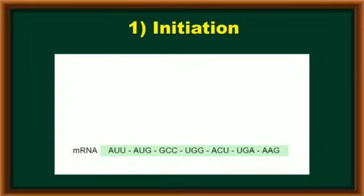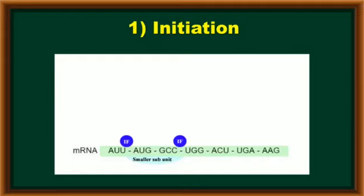In the first step, initiation generally occurs in cytoplasm of the cell. In cytoplasm, the mRNA molecule is present from 5' to 3' direction. During this initiation, the smaller subunit of ribosome first attaches to mRNA molecule. Then the larger subunit is needed to attach on mRNA to form ribosomal complex. For the initiation of this translation process, it requires some initiating factors. Generally, in prokaryotes, IF3, IF2, and IF1 - these three initiating factors help to initiate translation.